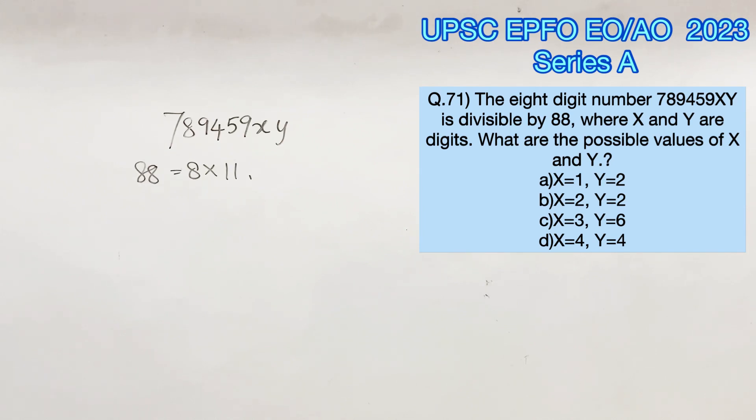If a number is divisible by 88, it should be divisible by both 8 and 11. We know the divisibility rule of 11 is that the sum of the digits in the odd places minus the sum of the digits in the even places should provide a result of either 11 or 0. So in the given number,